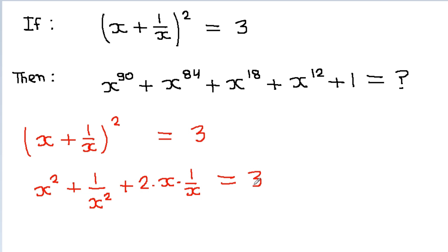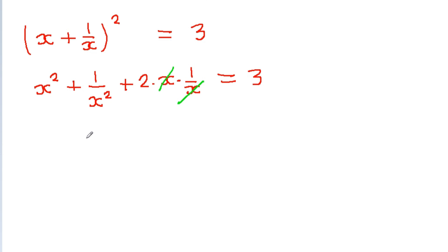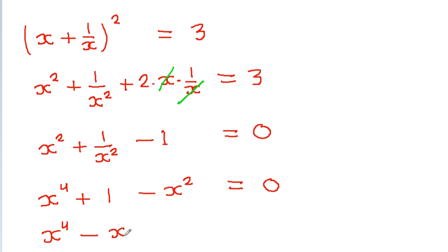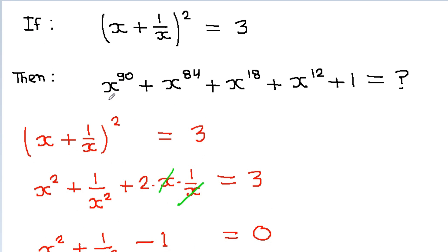The x and 1/x cancel, giving x² + 1/x² + 2 - 3 = 0, so x² + 1/x² - 1 = 0. Multiplying through by x² gives x⁴ + 1 - x² = 0, or x⁴ - x² + 1 = 0. Call this Equation 1.